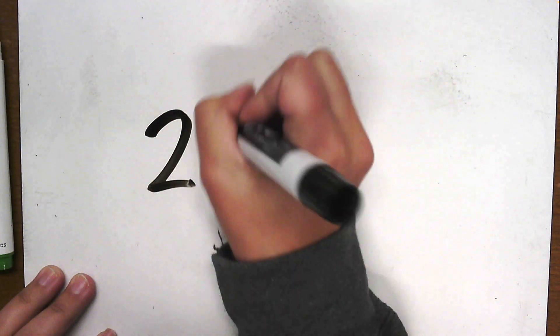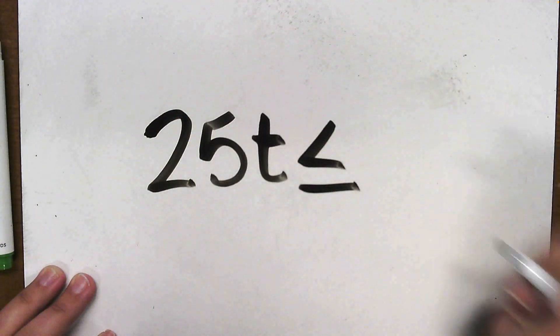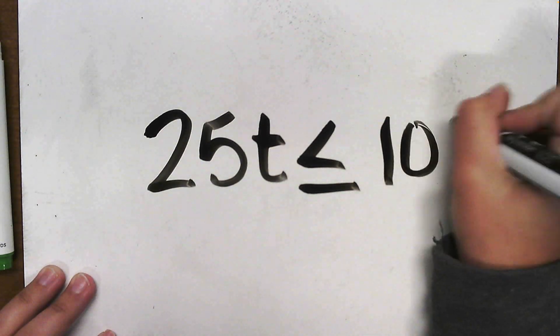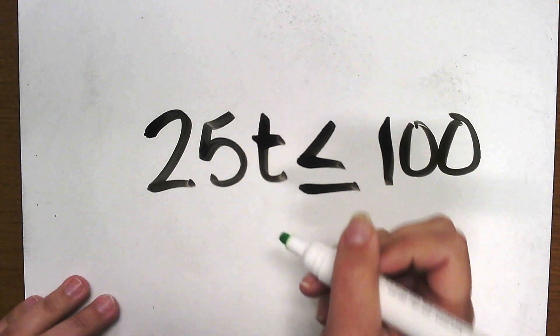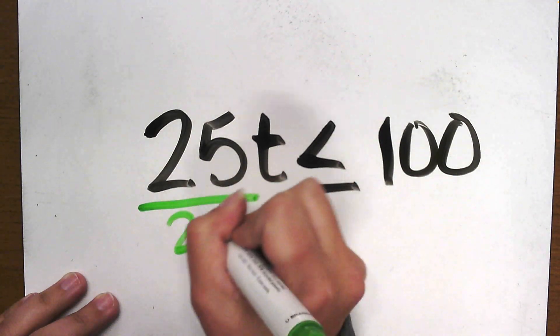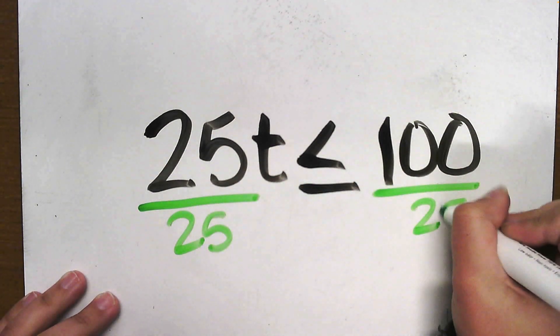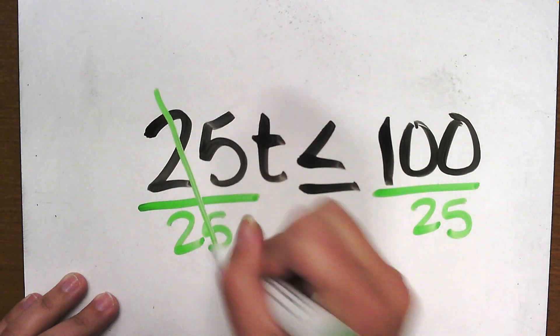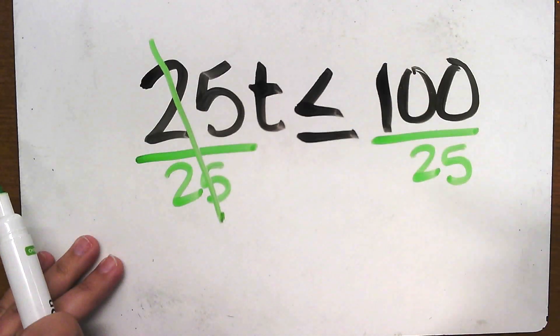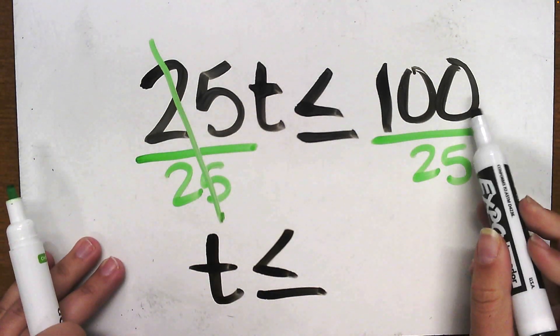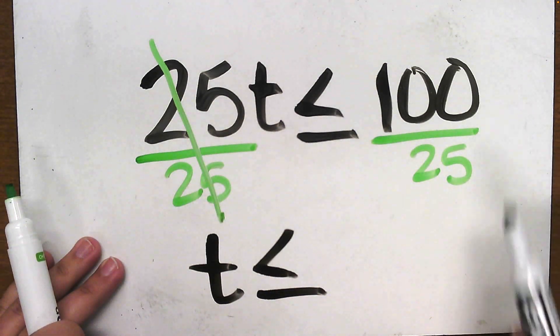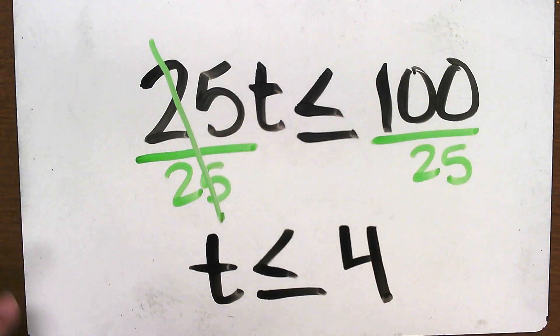Let's do another one. Multiplication and division. 25t is less than or equal to 100. The number and the variable are connected, meaning it's multiplication. So I need to do the inverse operation, which is division. I'm going to divide by 25. What you do to one side, you must do to the other. This crosses out, leaving me with still the T and my symbol, but I need my new number. 25 goes into 100 four times. That's my new inequality.